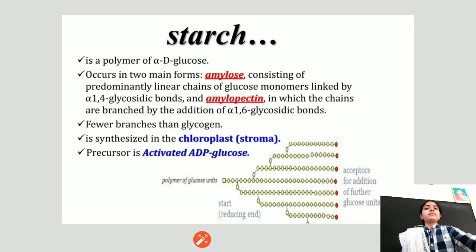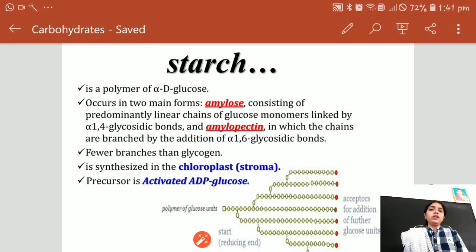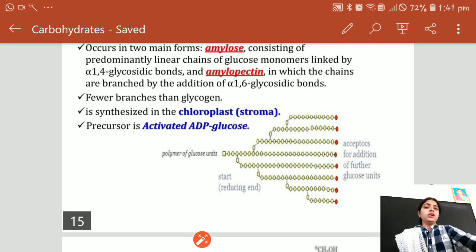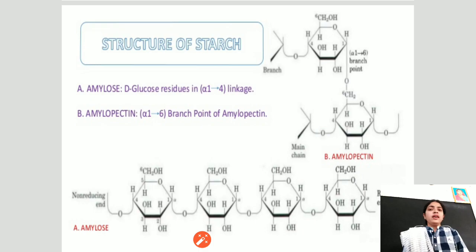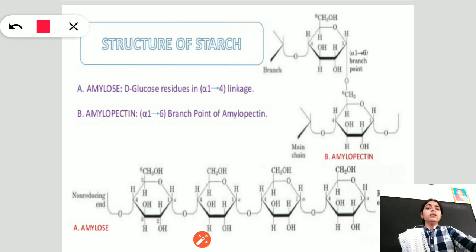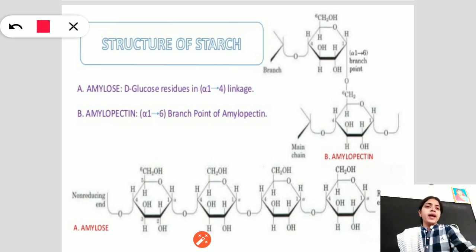Starch is the non-polar alpha-D-glucose polymer that occurs in two main forms: amylose and amylopectin. It is synthesized in the stroma of the chloroplast. Amylose has glucose linked by alpha-1,4 linkages in a linear chain, while amylopectin is a branched chain with alpha-1,6 linkages.